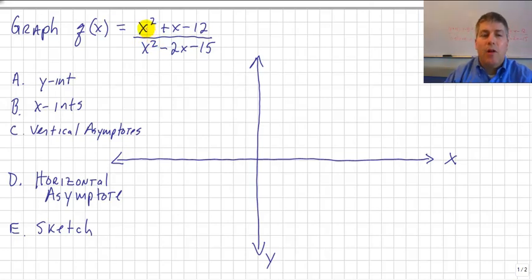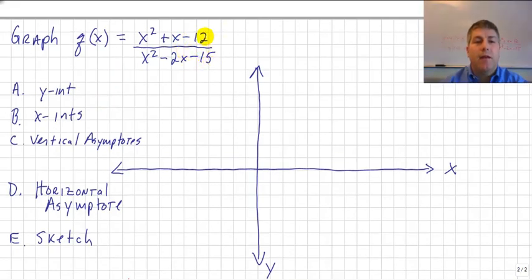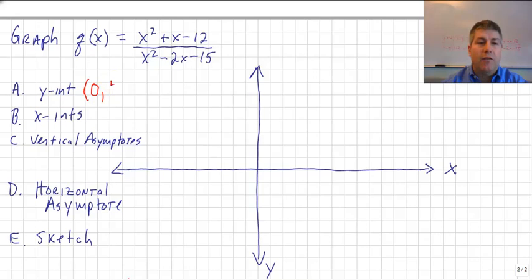You should be able to eyeball the y-intercept. If we put 0 in for x, x squared and x become 0 and drop out — same with the denominator. So our y-intercept really becomes just our constants: negative 12 divided by negative 15, which simplifies to positive 4 over 5. So the point (0, 4/5) is our y-intercept.